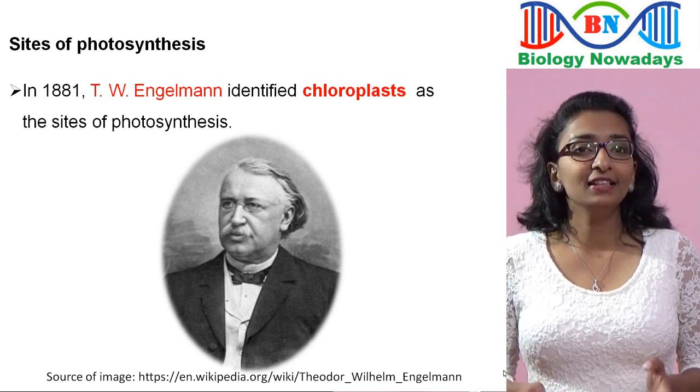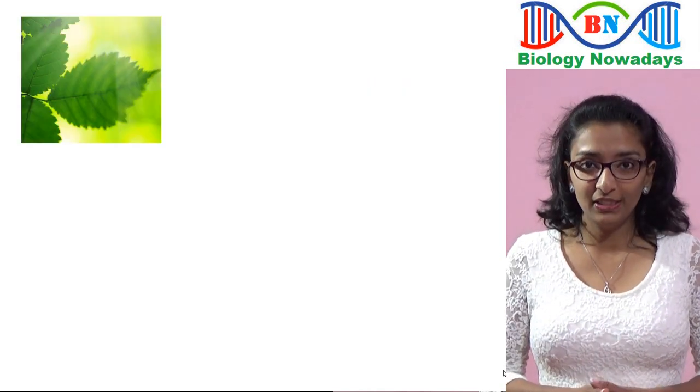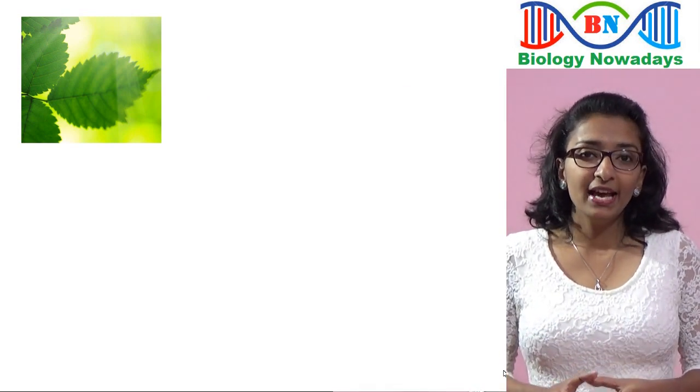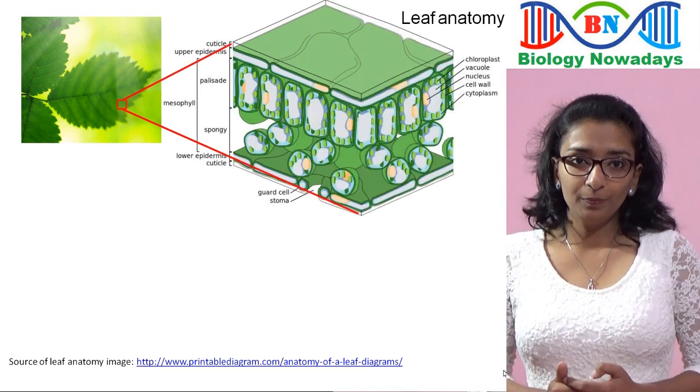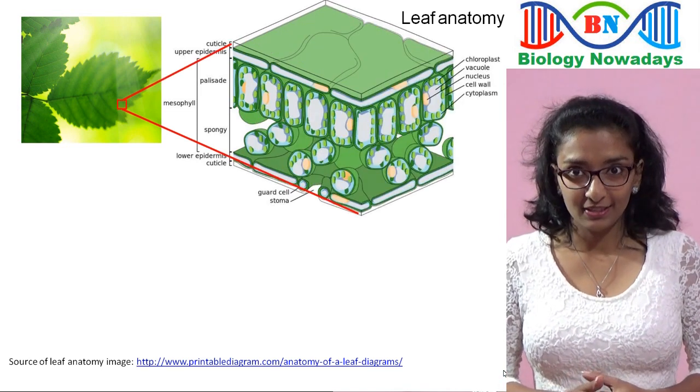Most chloroplasts are seen in the mesophyll cells of leaves. If you take a cross section of a small part of this leaf and examine it under a light microscope, you can see the leaf anatomy like this.